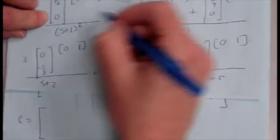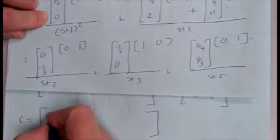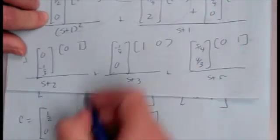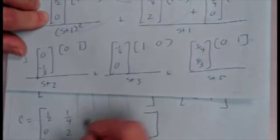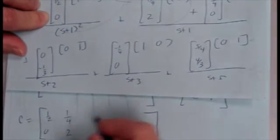For our C, corresponding one, then we have to put them in the same order that we chose before, so we'll have a 1, half, 0, a 1, fourth, 2, for our 2 by 2 Jordan block.